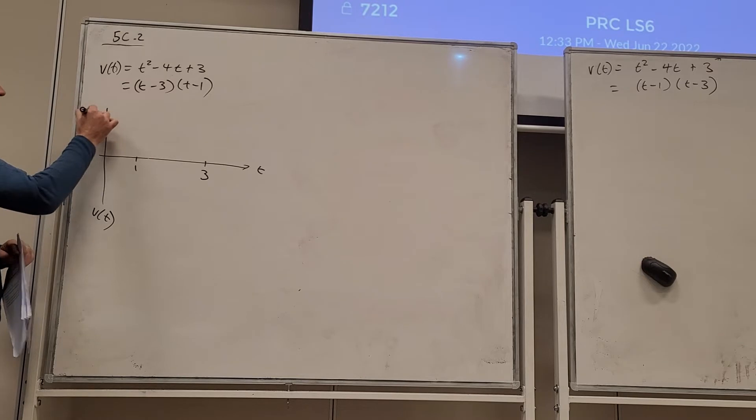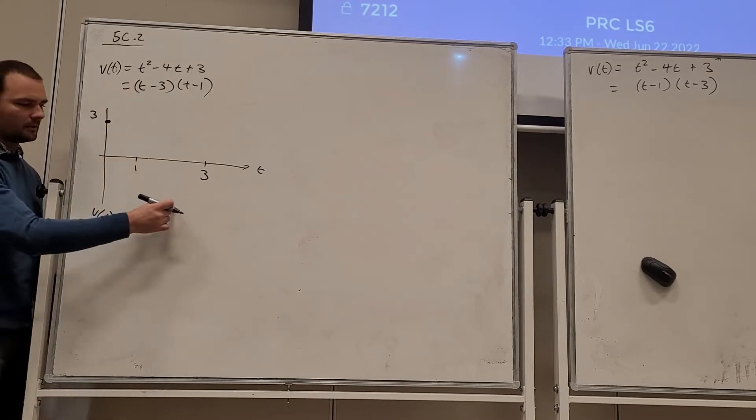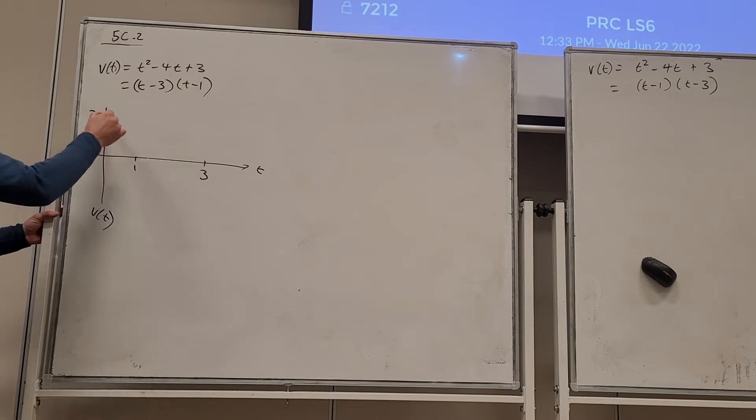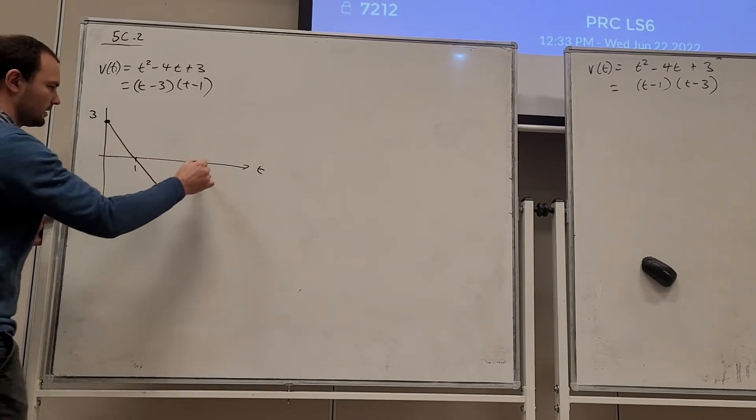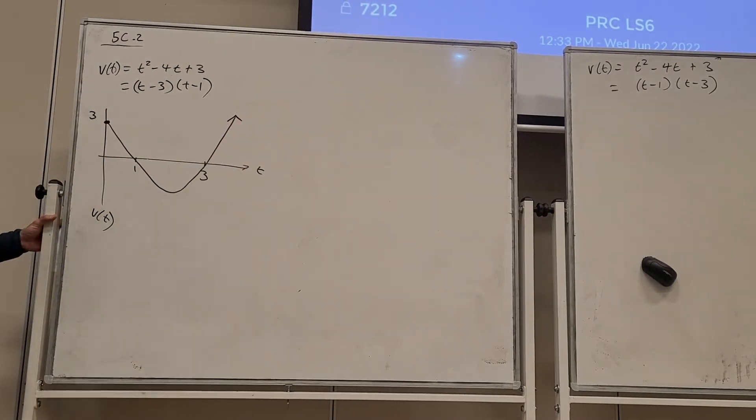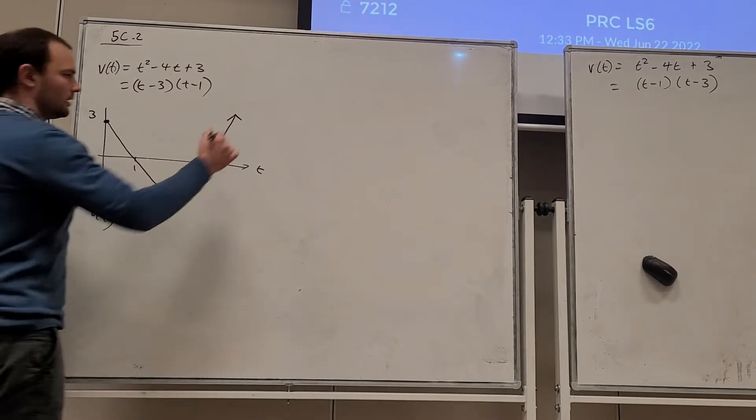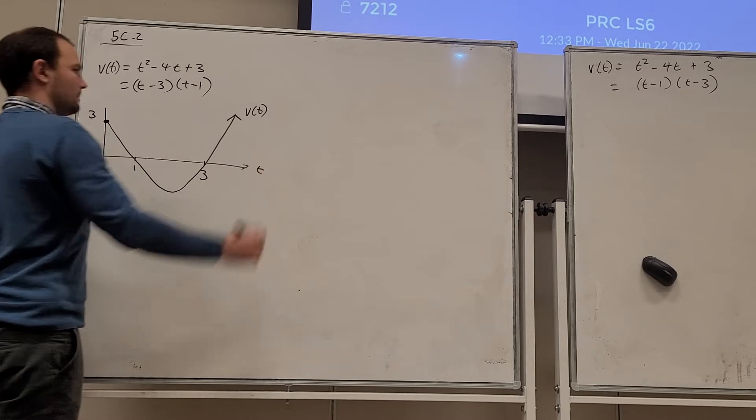So it crosses the y-axis at 3 here. We could work out the minimum point as well, but it's not really necessary for us to understand the graph. Here's what the graph looks like. That goes down and then up. Remember in kinematics, we don't consider negative values of time. So this is the velocity time function.